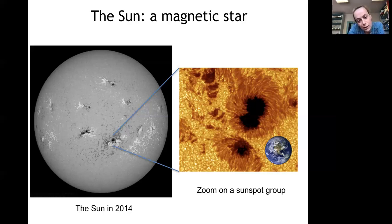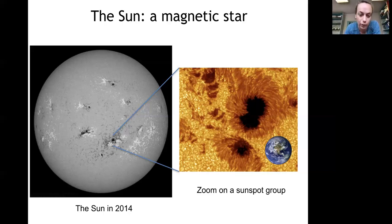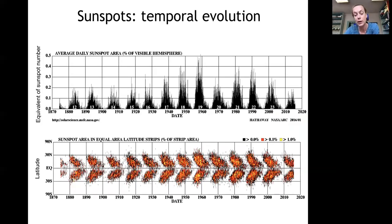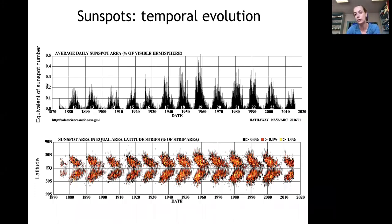Sunspots usually appear at the surface of the sun as bipolar structures with a positive and a negative polarity, because they look like big arches of magnetic flux tubes coming out of the sun. This is how the sun looked in 2014 in a magnetogram. We have had direct observations of sunspots since Galileo — roughly 400 years — and we know there is a magnetic cycle at the surface of the sun which is visible in the sunspots over time.